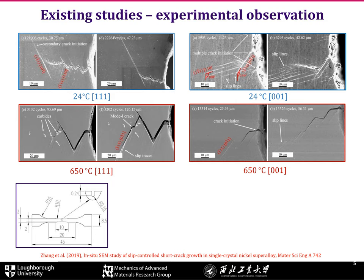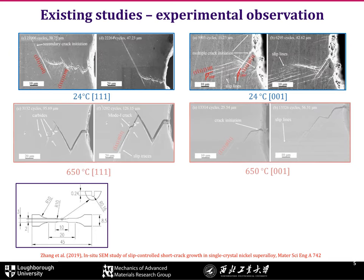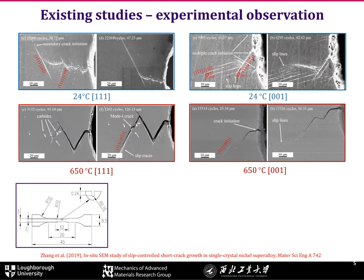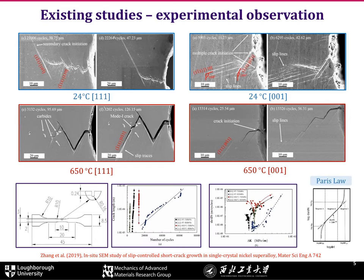Two orientations, [111] and [001], at both room temperature and high temperature were tested. Zigzag manner cracks were observed, and the growth rate reveals that the crack at the early stage doesn't follow the Paris law, which is usually used to predict the growth rate of long cracks.